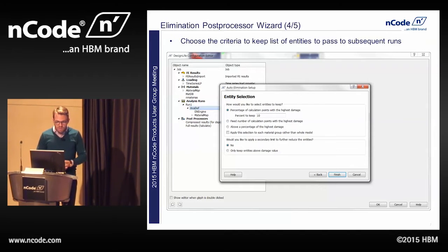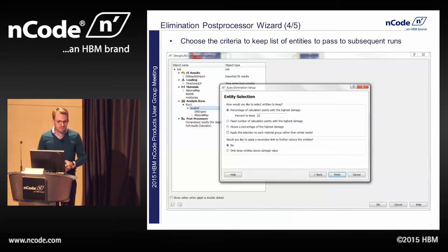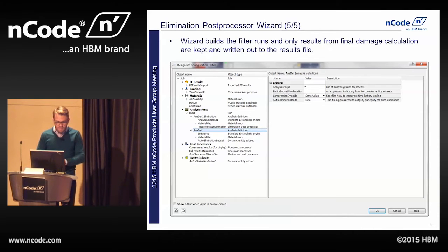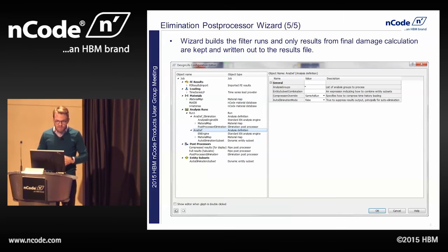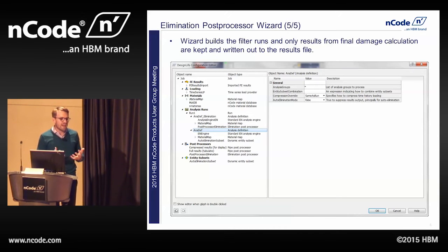You select which mode you want to use, then choose a percentage of the highest damage to keep. It will also ask if you want to add a secondary filter to reduce your data even further. After you're done, it builds all of these items in the Advanced Edit for you. It's a very quick and easy way to add these runs, allowing you to only perform a detailed calculation on the nodes that actually need it.